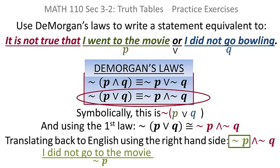Remember, P was I went to the movie. So not P would be I did not go to the movie. And the or becomes an and. And finally I've got the not Q.